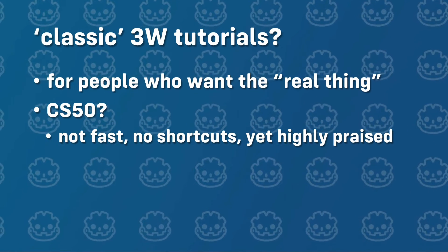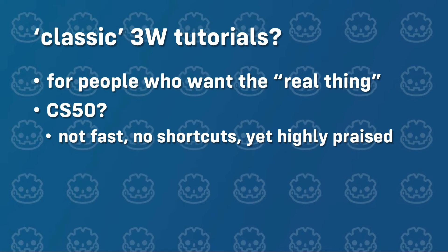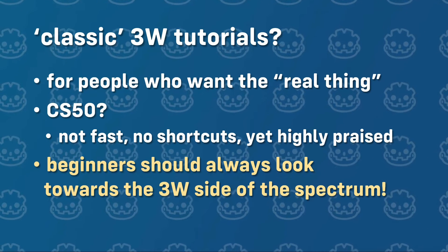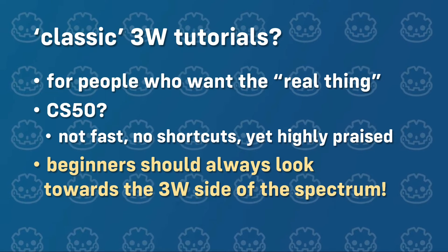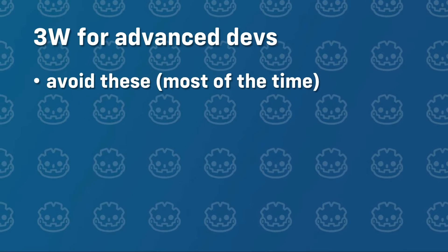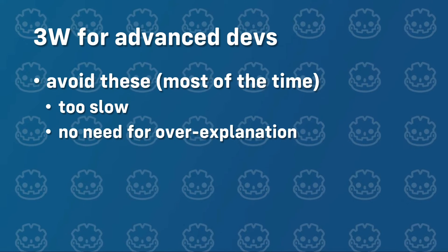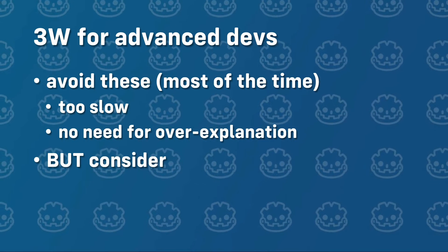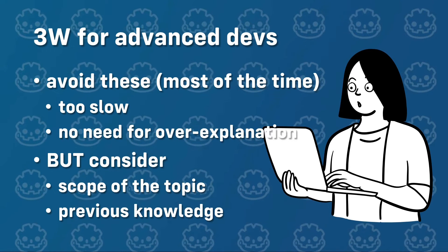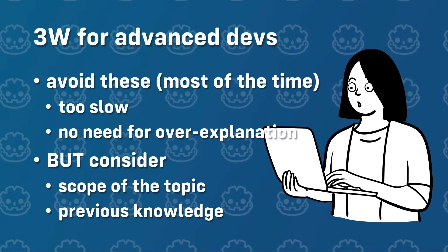The key takeaway here is this: between the LearnGDScript from zero and the more traditional 3W courses, pick whatever works for you. What matters is beginners should look for tutorials on the right side of the spectrum so they can develop a deeper understanding of fundamental concepts. However, advanced users should avoid these tutorials most of the time — it is too slow for them and they usually don't need detailed explanations to follow along. There are exceptions, especially with more difficult material. If Jane knows nothing about procedural generation and wants to learn the ins and outs of the topic, she is much better off with a good 3W tutorial than watching 10 manual tutorials.